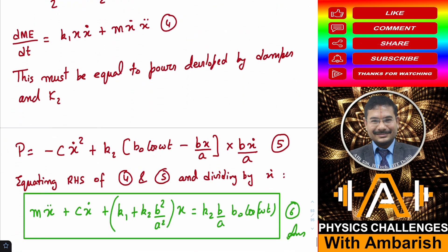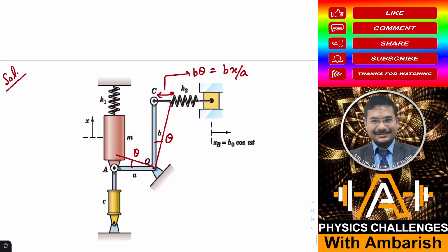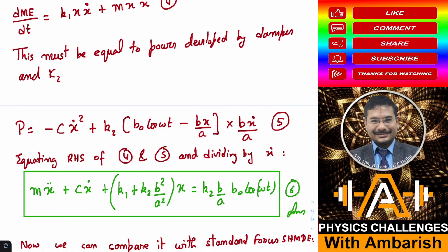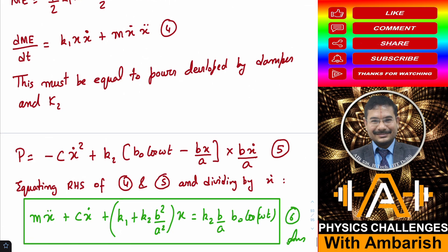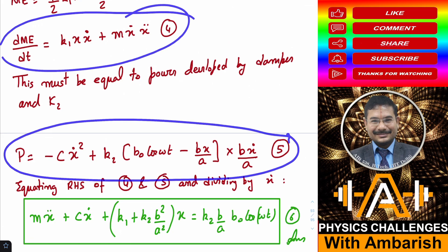What's the power developed by the damper? If it is moving upward with velocity X dot, the damping force is downward and equals C times X dot. The standard notation is B times V, if B is the damping coefficient and V is the velocity, the damping force becomes B times V. In our case, B is replaced by C and velocity is X dot. Force becomes C X dot acting in the downward direction opposite to the velocity. Power developed becomes C X dot into X dot with a minus sign because force and velocity are in mutually opposite directions. Power developed by the damper is minus C X dot squared. Power developed by the K2 spring: the force was K2 into (B_0 cos omega t minus B X by A) and you need to multiply by the velocity of the point of action of this force. Displacement is B X by A, so velocity is B times X dot by A.